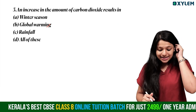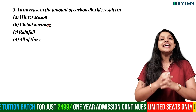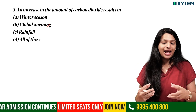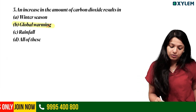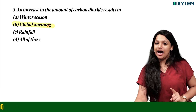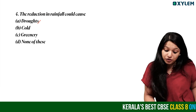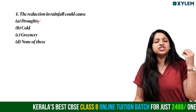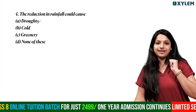Third question: An increase in the amount of carbon dioxide results in what? When carbon dioxide increases in the atmosphere, it leads to drought. The correct answer is drought.